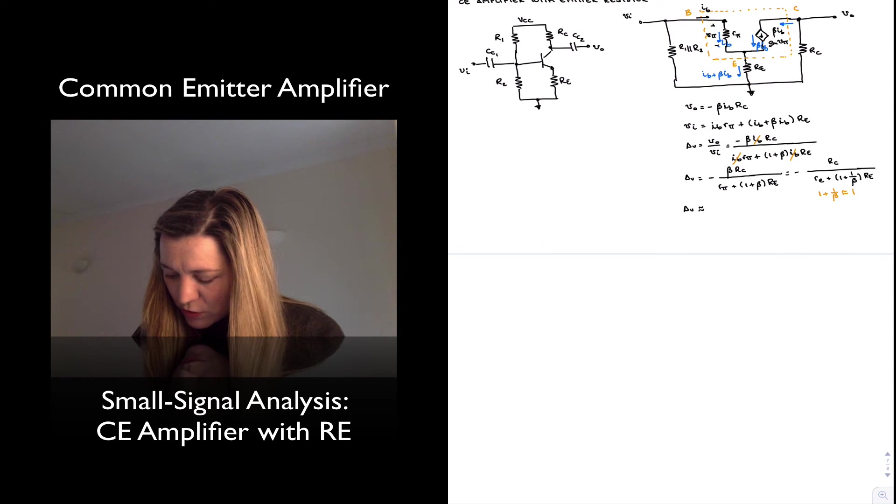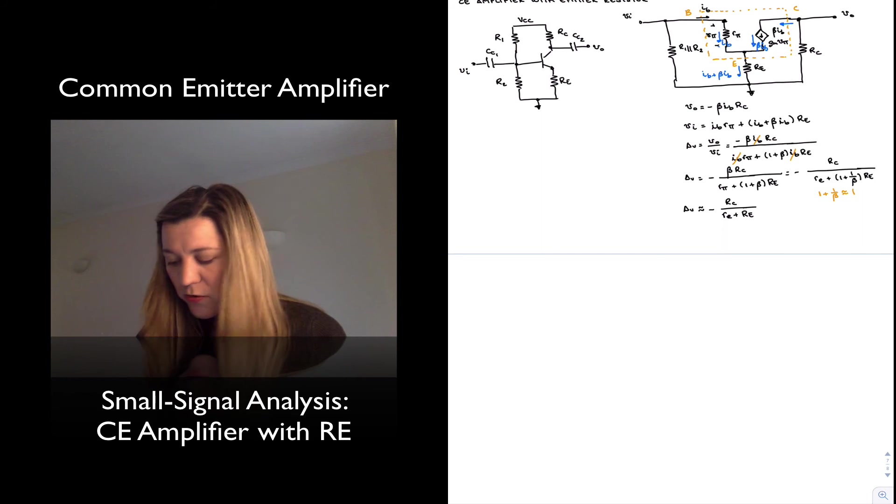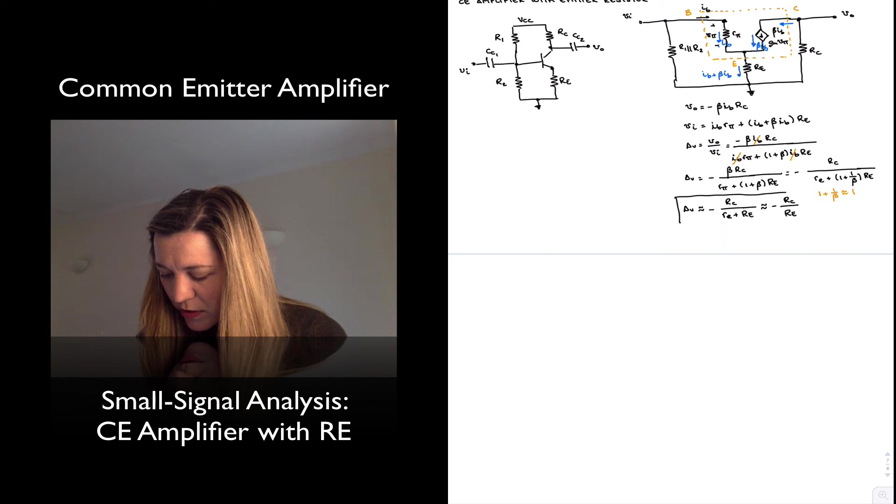And with that approximation, we are left with A_v being approximately equal to negative R_C divided by little r_e plus capital R_E. And again, since typically the emitter resistor will be much larger than little r_e, it will swamp little r_e, and we can further approximate this as negative R_C over R_E, which is again the expression that we came up with earlier.